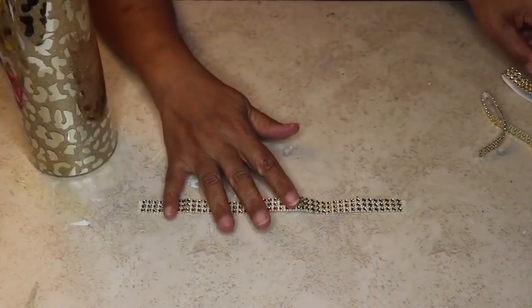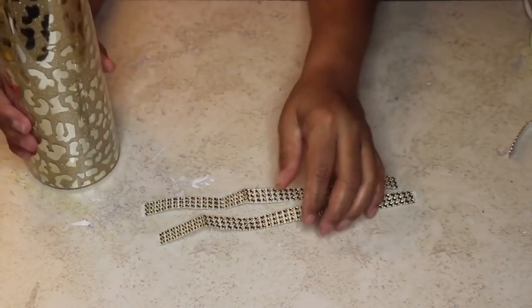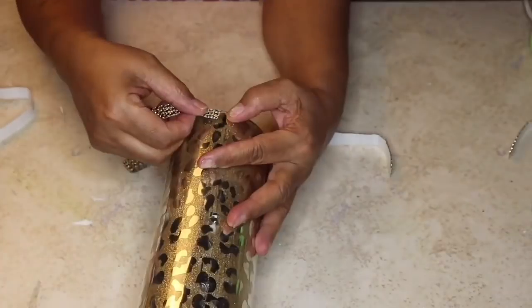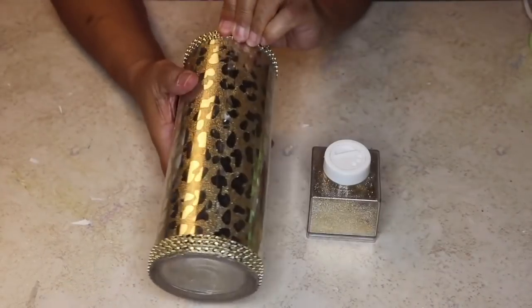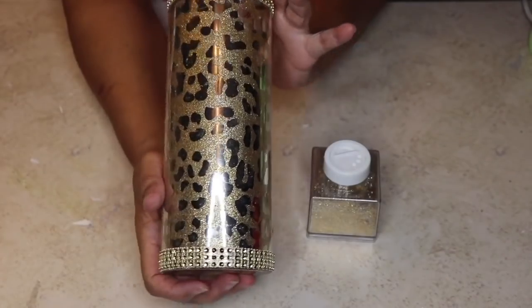Next I'm going to trim out the top and the bottom of my vase with this gold bling that I picked up from Dollar Tree and this is the bling with the adhesive on the back. I have a strip of three rows for the bottom of my vase and the strip that goes on the top has two rows and that's all there is to it.